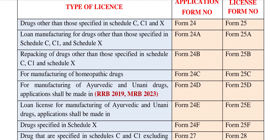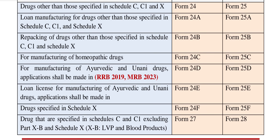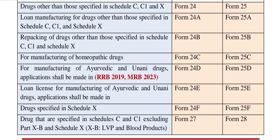Repacking of drugs — same concept. Repacking of drugs other than those specified in Schedule C under C1. So it is repacking. Now you can navigate it — you need to pack them. So we said: let's check out, we have to navigate this. We can navigate you. If you have any questions, you can answer the question in MRB 2023. The answer is 24D.